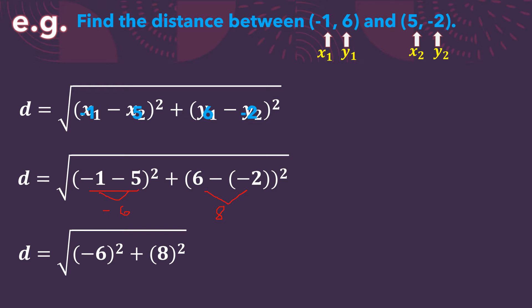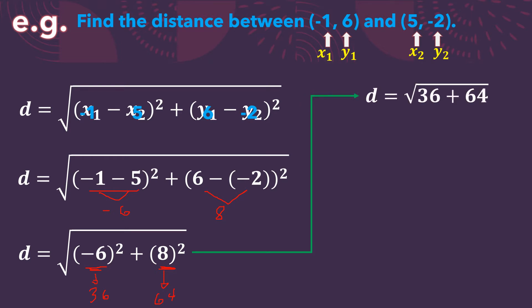Next, we simplify the exponential terms. Negative 6 times negative 6 gives us 36, while 8 squared — 8 times 8 — gives us 64. So d equals the square root of 36 plus 64. Combining these two terms: 36 plus 64 gives us 100. So d equals the square root of 100, and the square root of 100 is 10. Therefore, the distance between (-1, 6) and (5, -2) is 10 units.